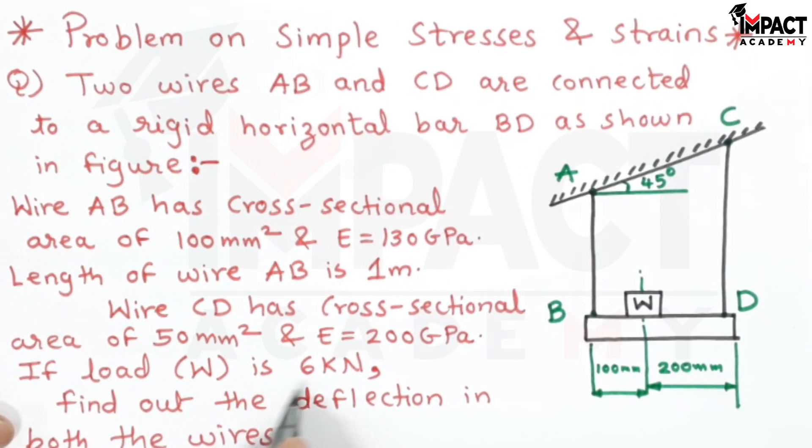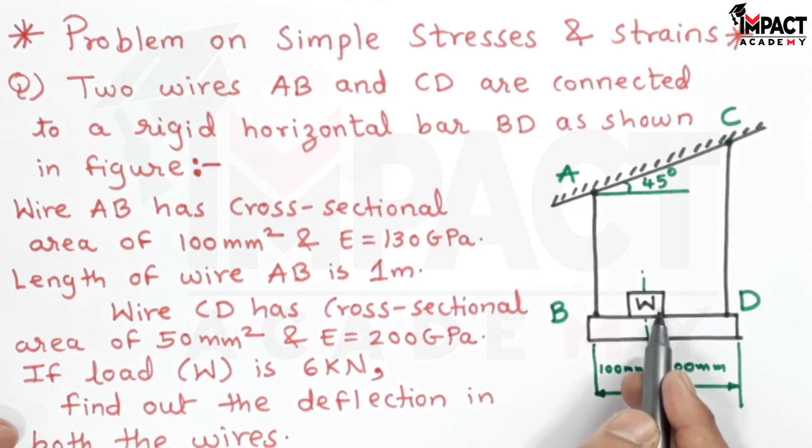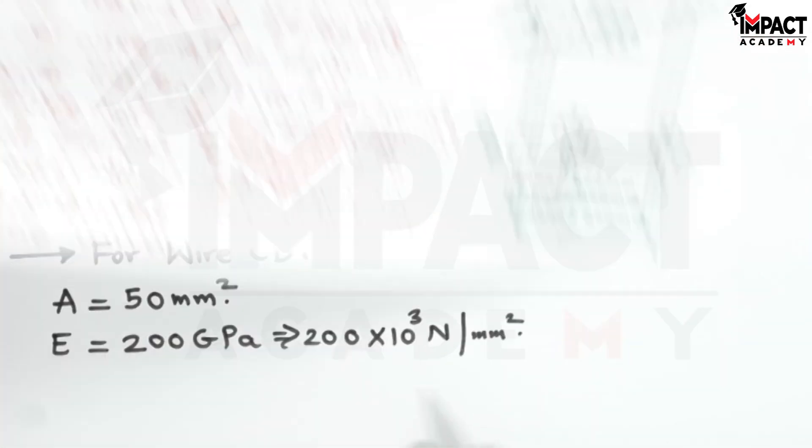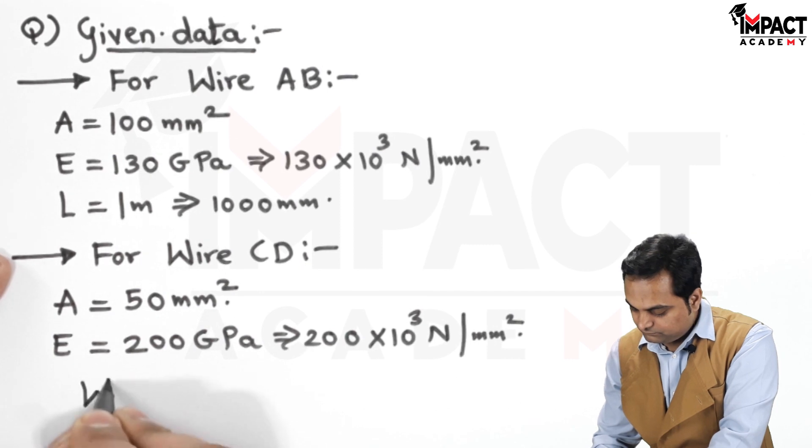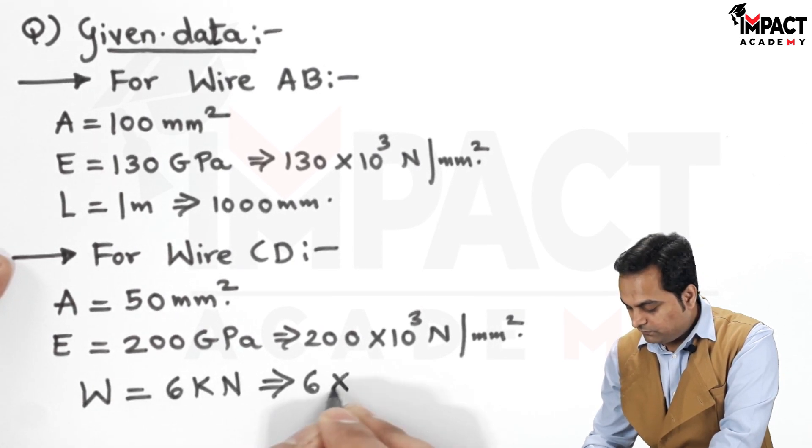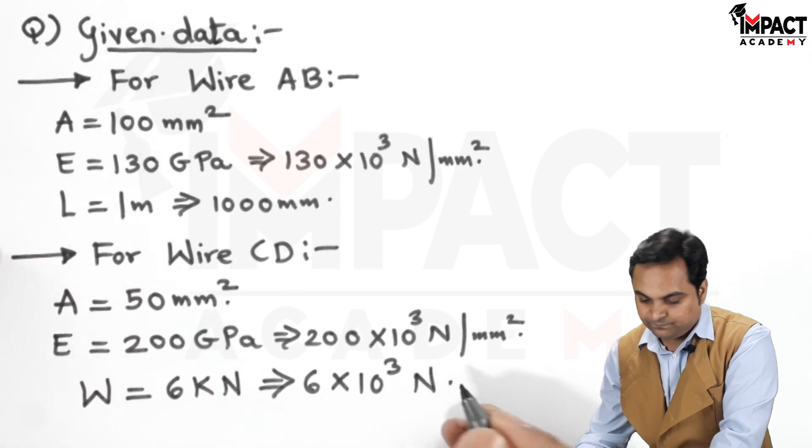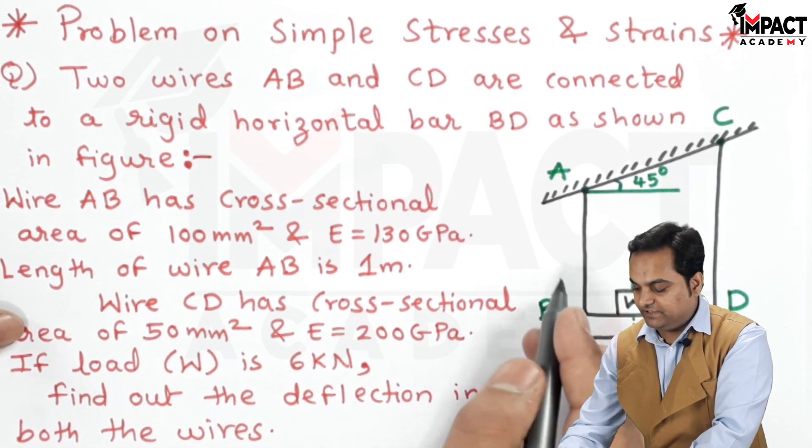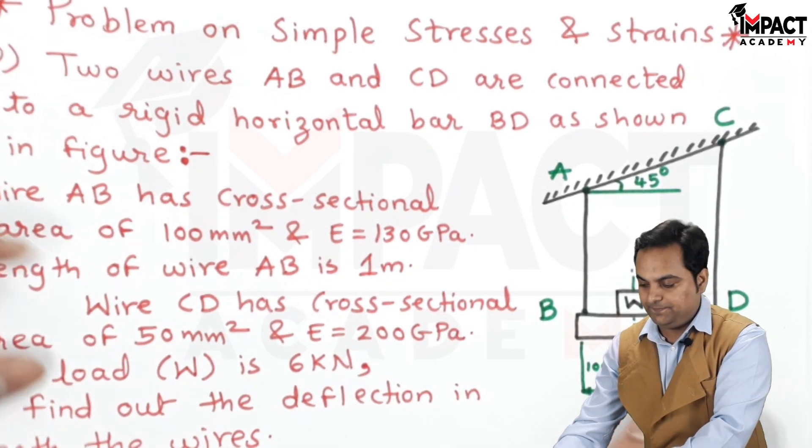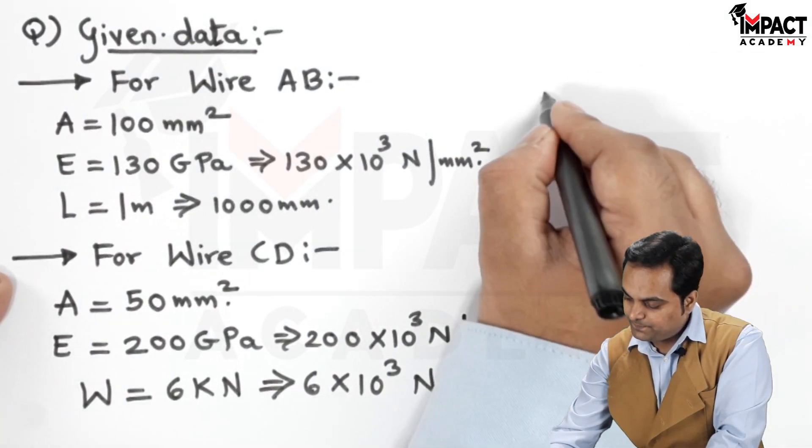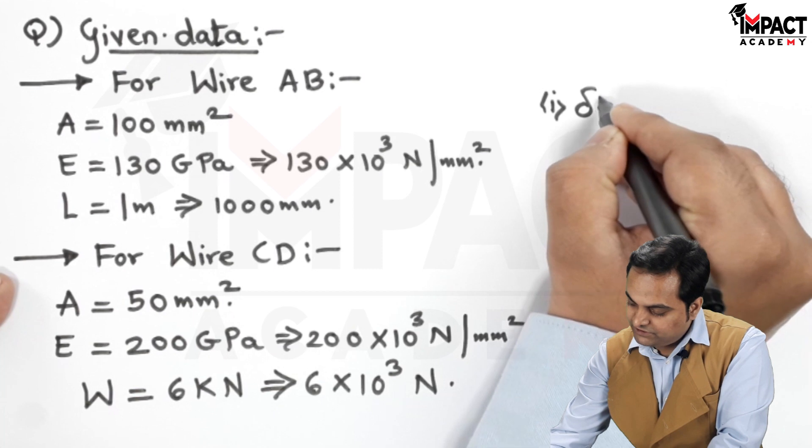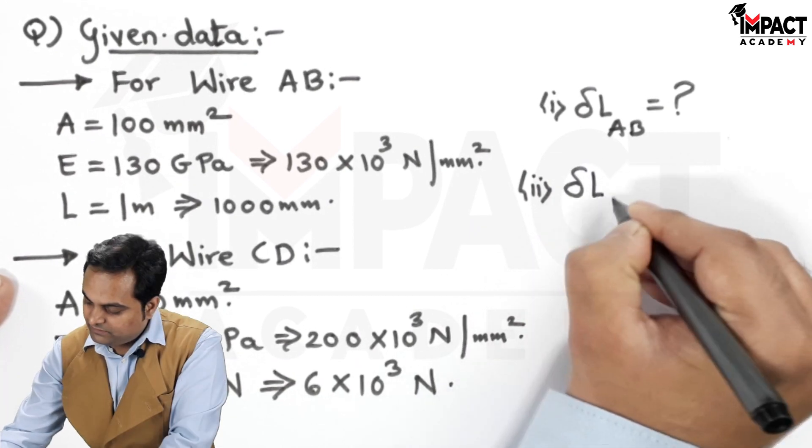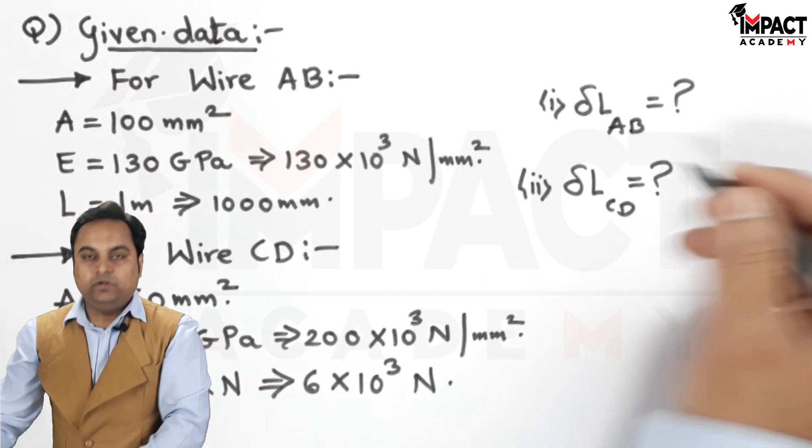Then, if the load W is 6 kN as shown in the figure, there is a load kept at a distance 100 mm from B and 200 mm from D. So the value of W is 6 kN, so 6 into 10 raise to 3 N, then we have to find out the deflection in both the wire, that is deflection in AB and deflection in CD. The question is, deflection denoted by delta L in AB and delta L CD is what we have to calculate.